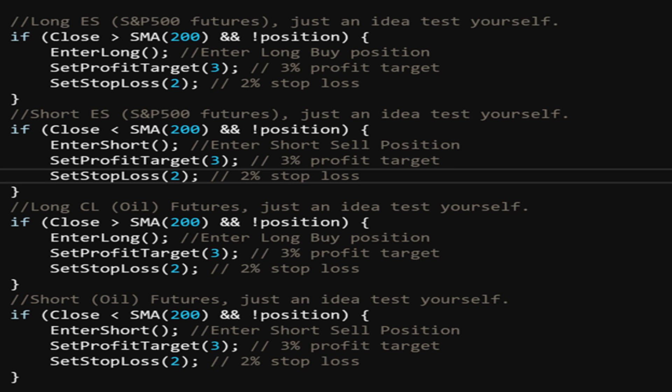And vice versa for the short. If the close is less than the 200 simple moving average, then we're going to go short with a 3% profit target and a 2% stop loss. So essentially four strategies because we have a long and short for ES and then a long and short for oil. And you know, ideally this would be a nice hedge strategy. Obviously these are ideas - test them for yourself. They're not fully tested strategies by myself, but these are ideas for you to take and build upon.